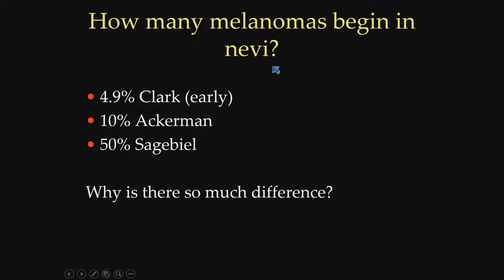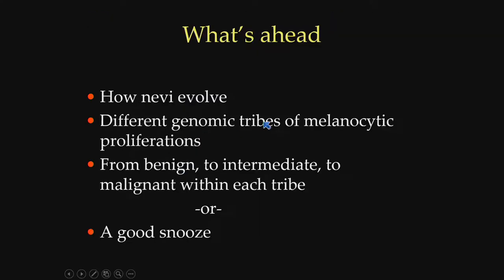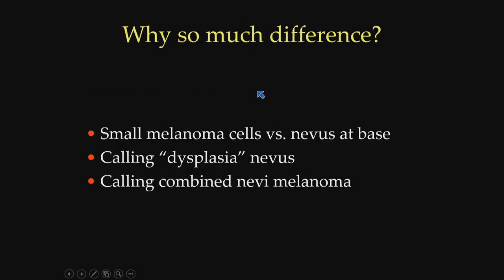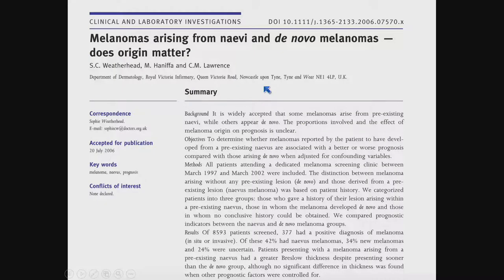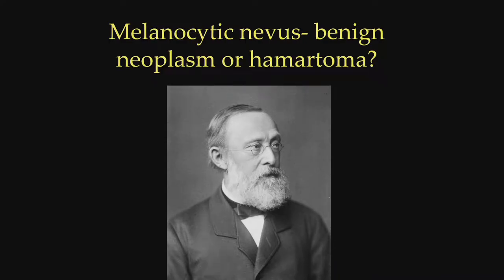One of the questions that medical students often asked back in the day when we used to teach medical students pathology is what percentage of melanomas arose in nevi. Wallace Clark early in his career said 5%, Bernie Ackerman said 10%, Dick Sagaviel said 50% — so I told them anywhere between 5% and 50%. We still don't really know the answer, but we do know there's a genomic progression. Which moles matter, and whether dysplastic nevi evolve into melanomas at a higher rate than other nevi — that debate is still unsettled.